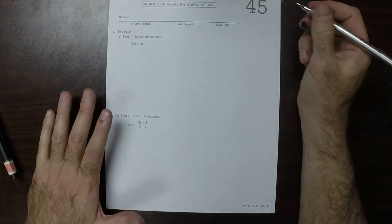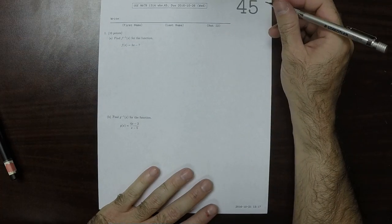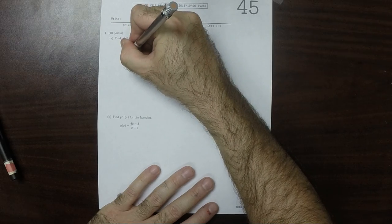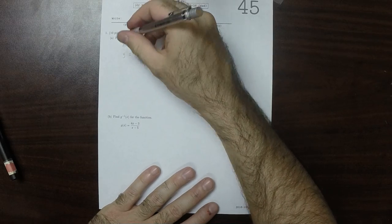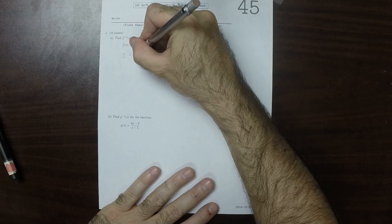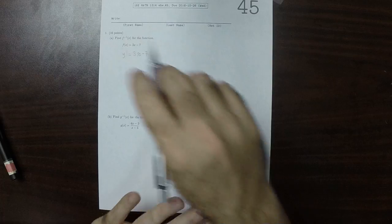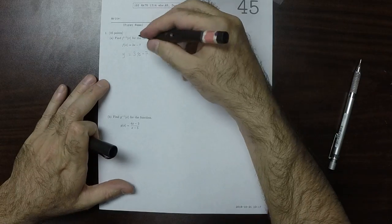This is the solution to Written Homework 45. Okay, find the inverse function. Okay, so then first we'll convert to the graph representation. So y is 3x minus 7. Okay, this means that we're considering the graph.